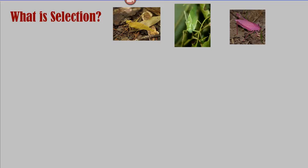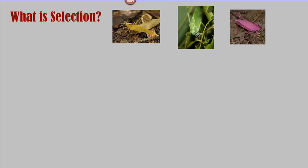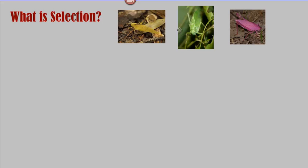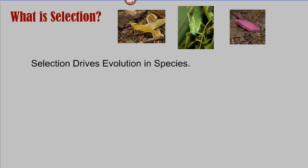Before we begin talking about natural selection specifically, I'd like you to understand what selection is in general. If we think about katydids or any animal that has variation, selection is simply the process which drives evolution in species. Selection requires that there be something in the environment that picks certain individuals — in the case of katydids, something which picks certain individuals to survive and reproduce.